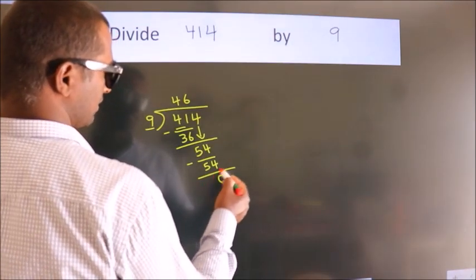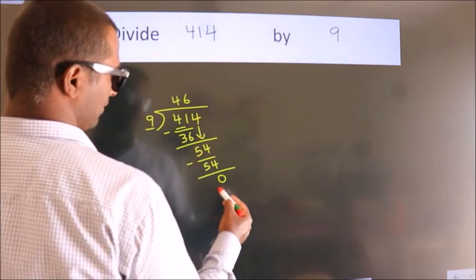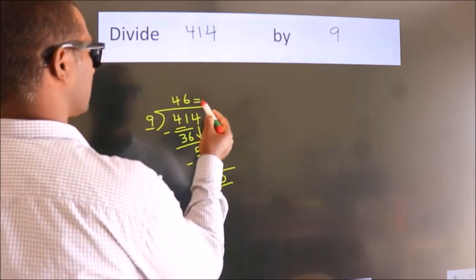After this, no more numbers to bring it down and we got remainder 0. So, this is our quotient.